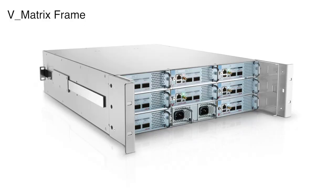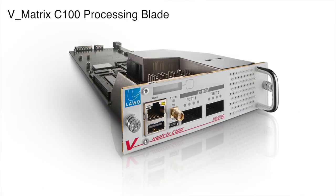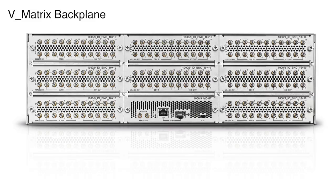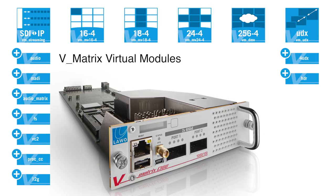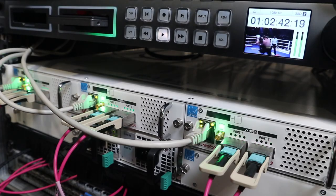The V-Matrix is made up of four main components: the physical frame, C100 processing blades, rear IO modules, and virtual modules. The system takes SDI signals from our Blackmagic Hyperdeck and converts them into ST2110 essences, utilising our C100 streaming cards.